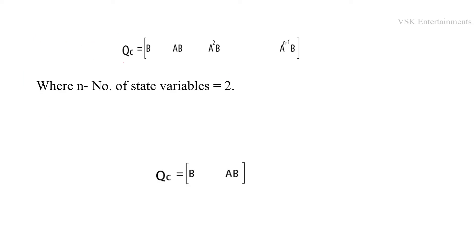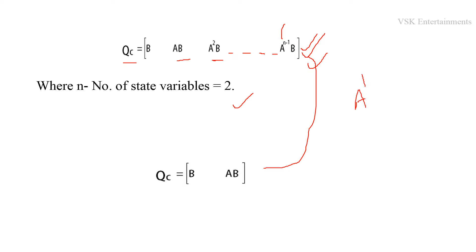The formula for the controllability test matrix is QC = [B, AB, A²B, ..., A^(n-1)B]. In our problem, the number of state variables is 2, so QC = [B, AB]. We will determine AB and B, then find QC, and finally compute the determinant of QC to conclude whether the system is controllable or not.